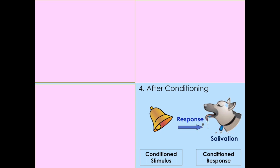The bell — the conditioned stimulus — when rung completely alone, causes a conditioned response of salivation in the dog. The dog has learned to associate the bell with food and therefore has the conditioned response of salivating to the conditioned stimulus.